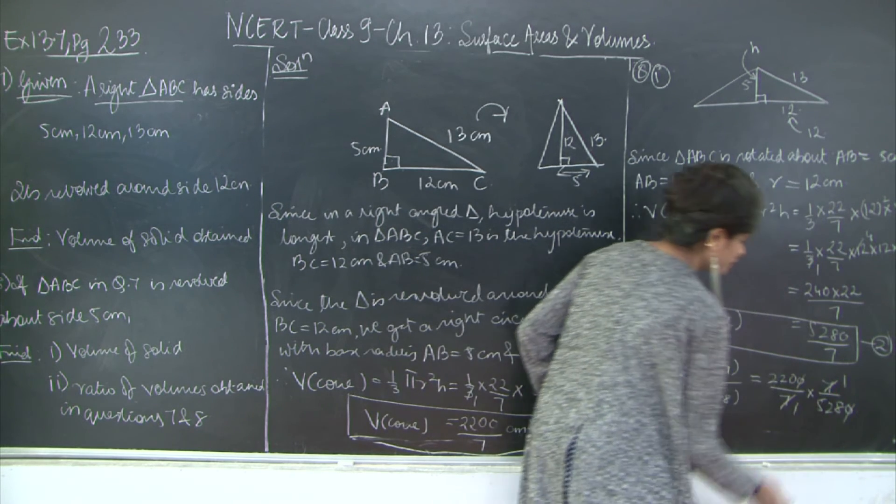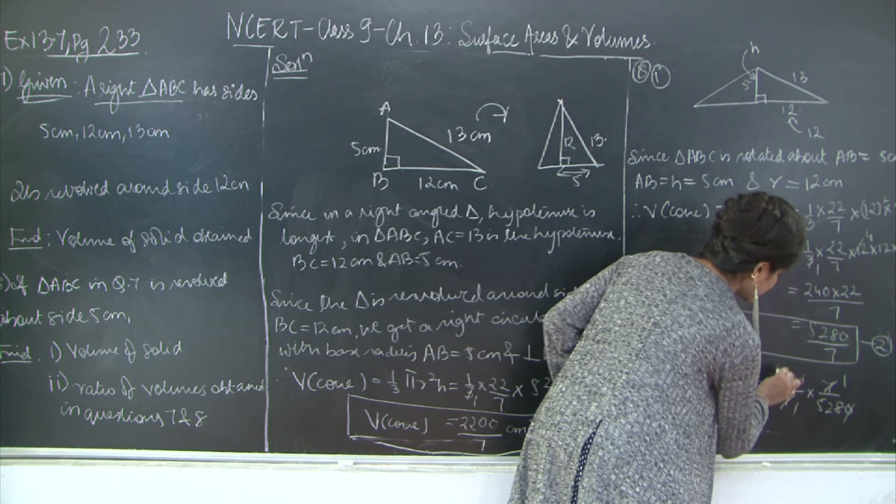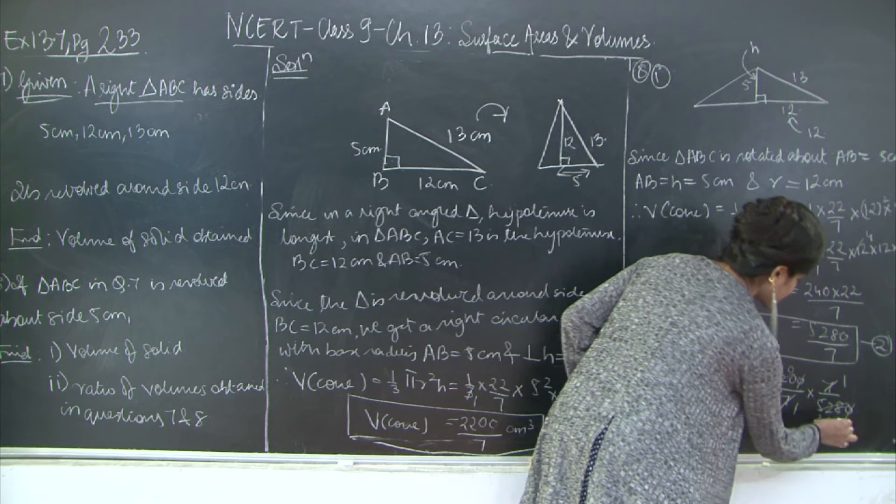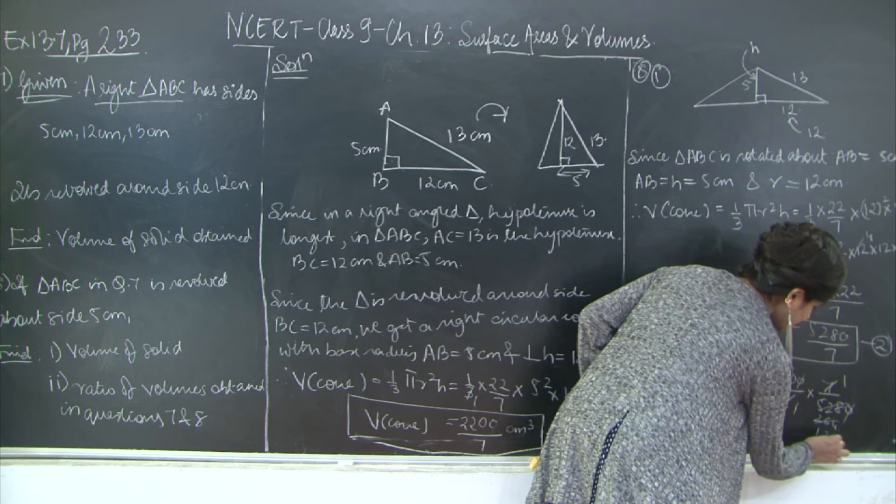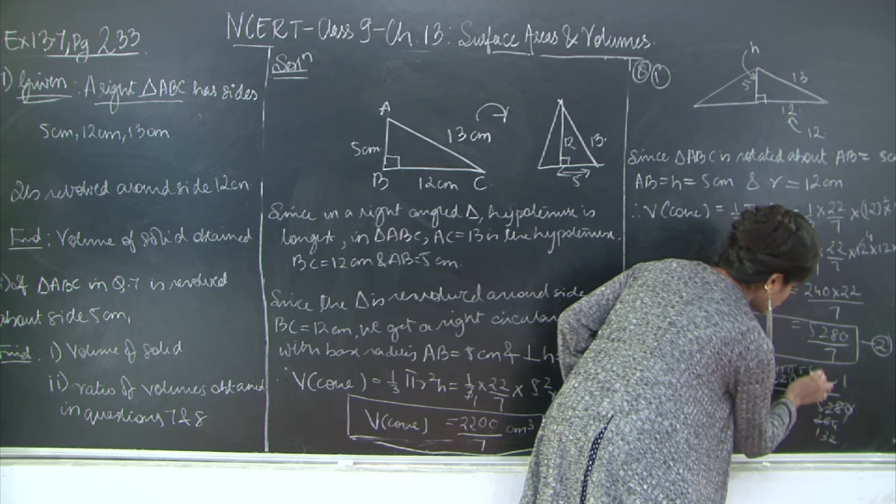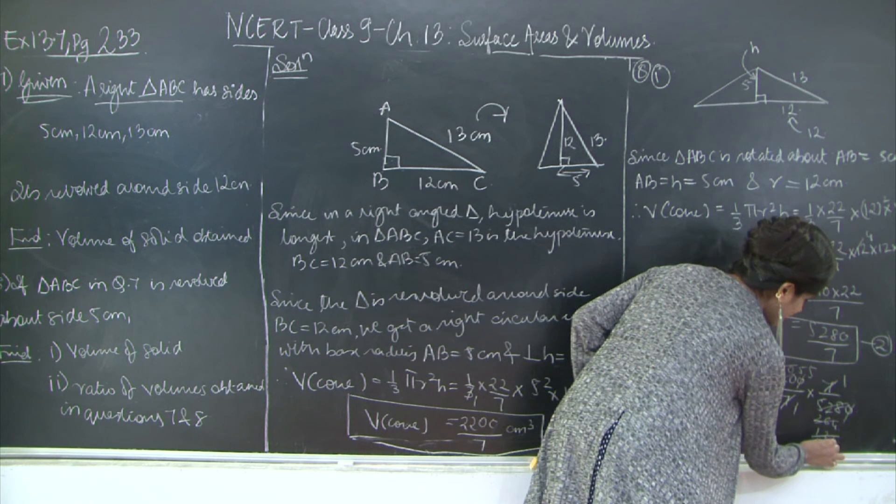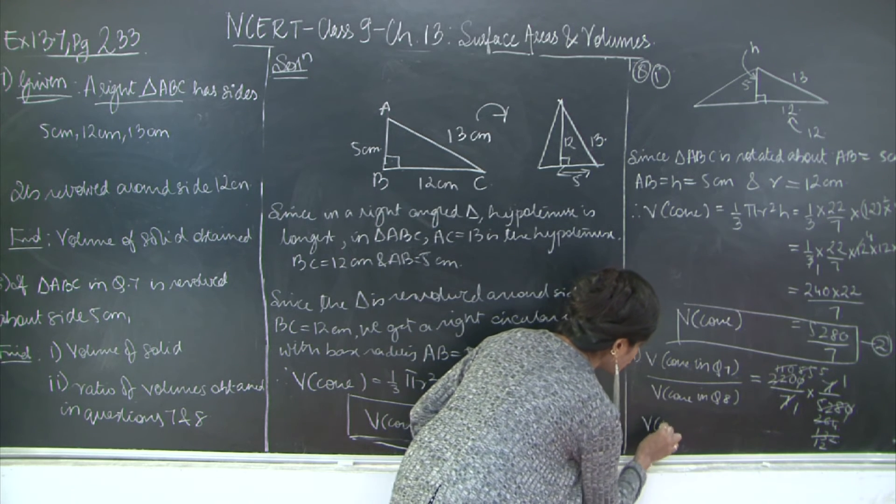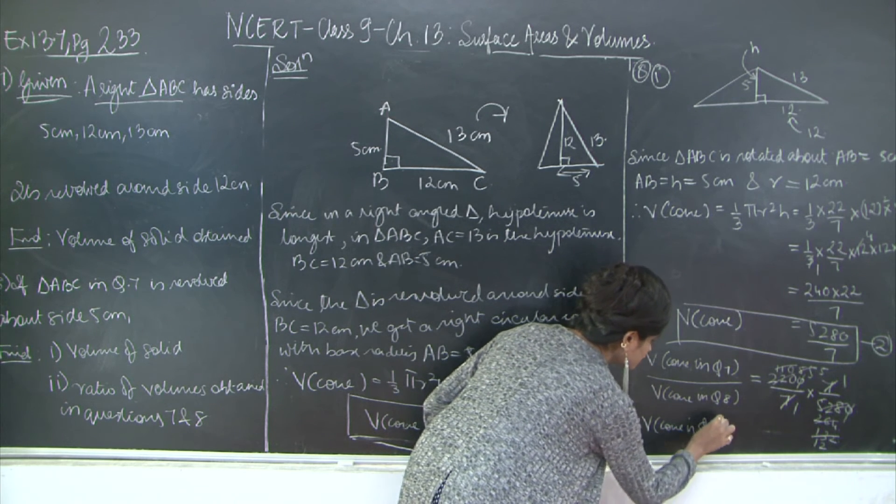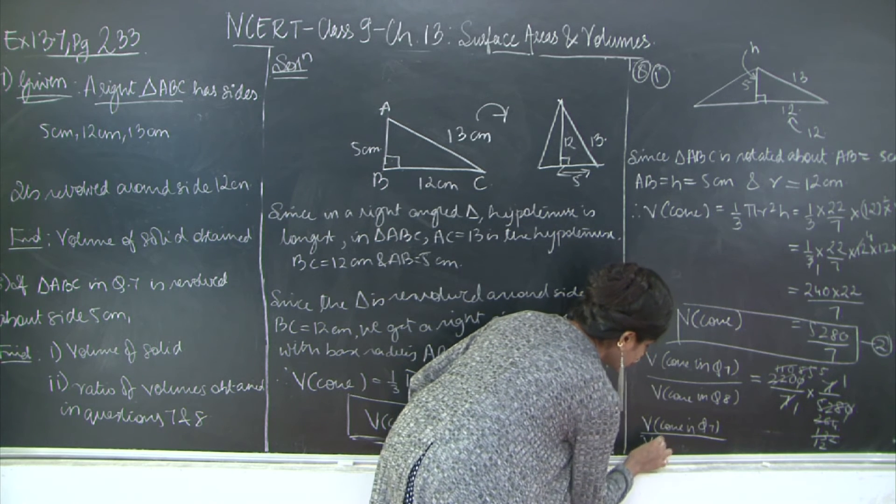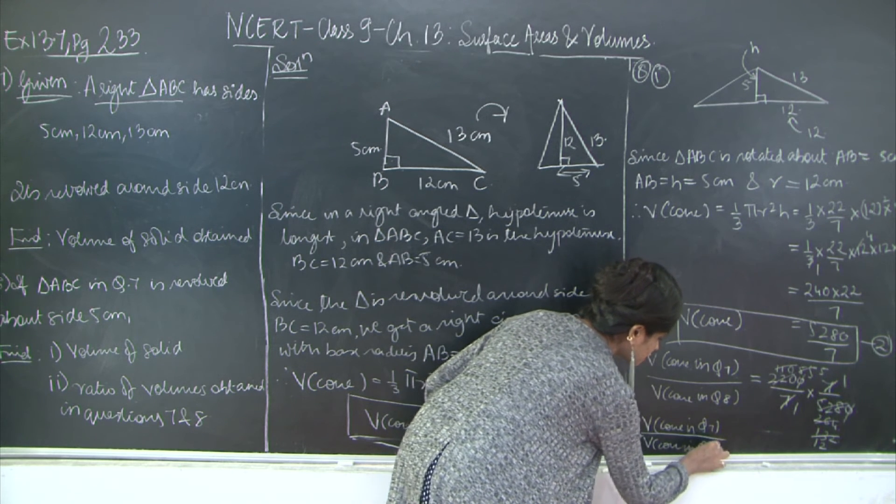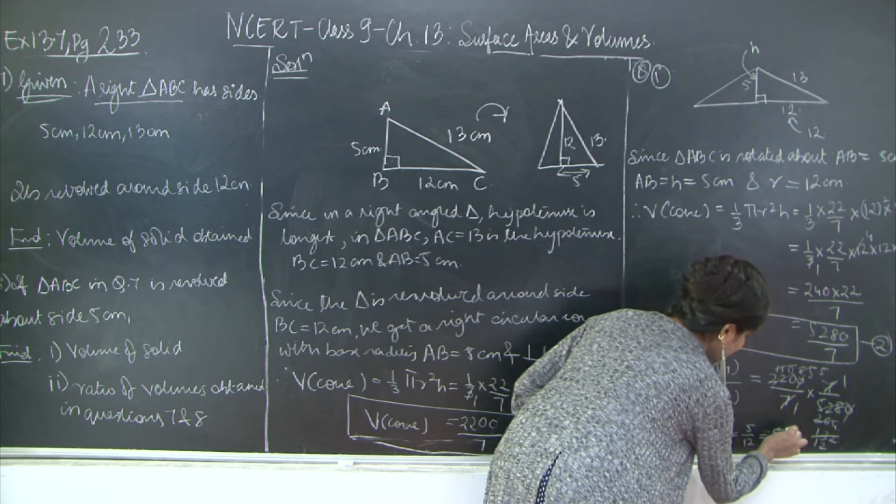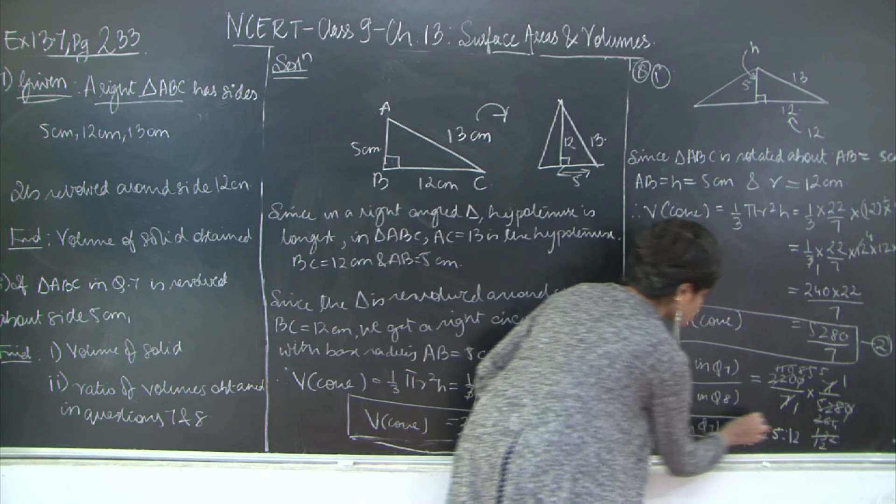So the second sub question: volume of cone in question 7 upon volume of cone in question 8 is equal to 2200/7 upon 5280/7. So why did I take the reciprocal of this number? Because this term is going to divide this term. When I say a divided by b, it means the same thing as a × 1/b. This is what has happened. So when I am dividing one with the other, the other term becomes the reciprocal. So you get the calculation, and the volume of cone in question 7 upon volume of cone in question 8 is equal to 5/12. So this ratio is nothing but 5 is to 12.